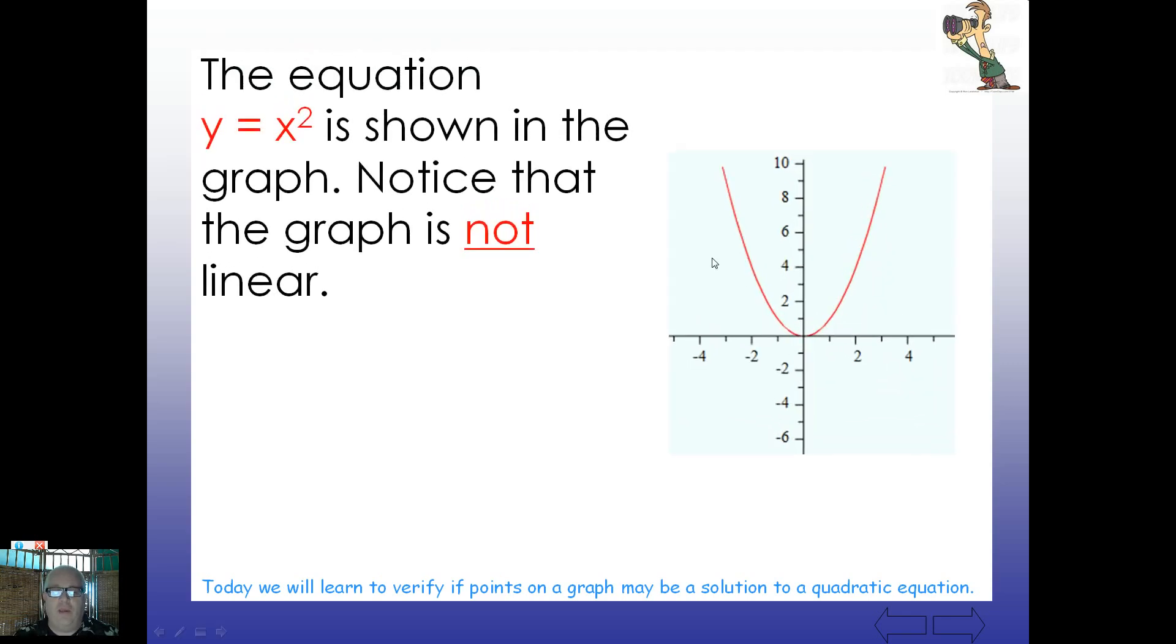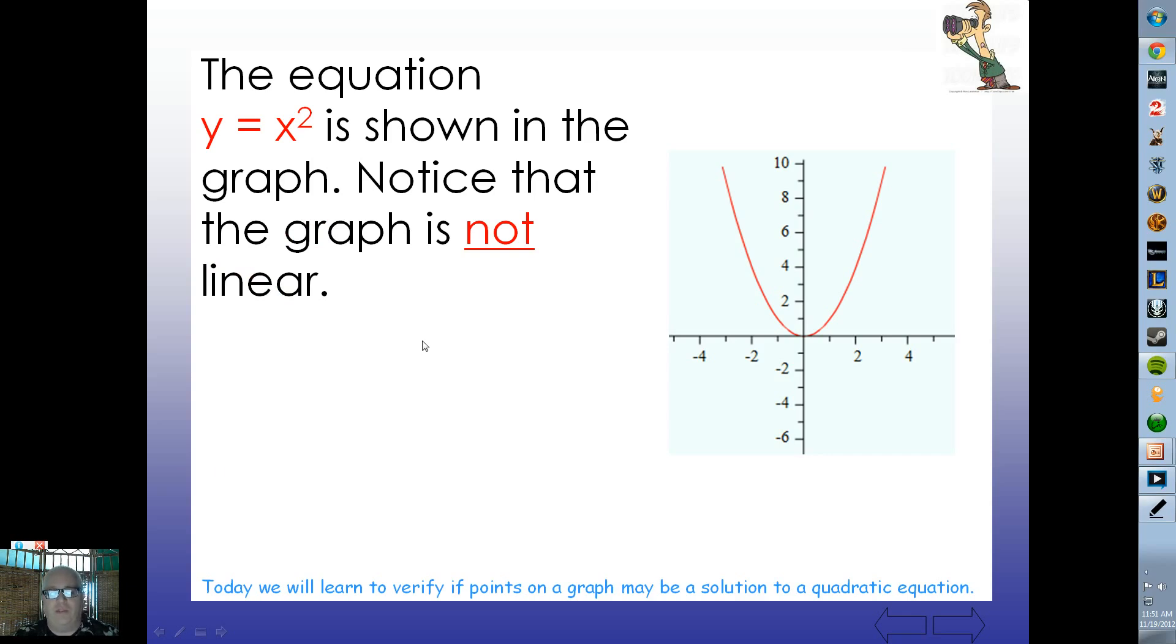Here is the general form, this quadratic equation of y equals x squared is shown in this graph. Notice that this graph is not linear of course. A linear is a straight line. You'll know that the first four letters in the word linear are line. And so we notice here that this is not a linear function. But it does actually have this curve in it.